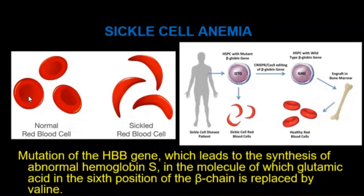Sickle cell anemia involves normal red blood cells versus sickle-shaped red blood cells. It is caused by a mutation of the HBB gene, which leads to the synthesis of abnormal hemoglobin in which glutamic acid in the sixth position of the beta chain is replaced by valine.